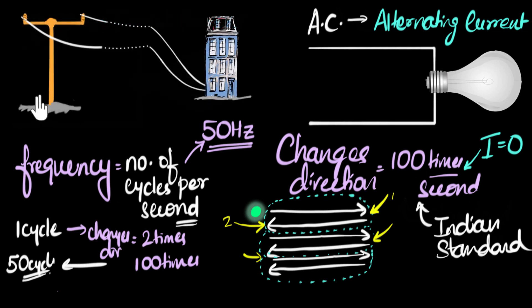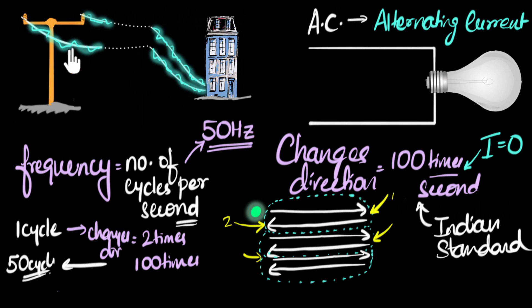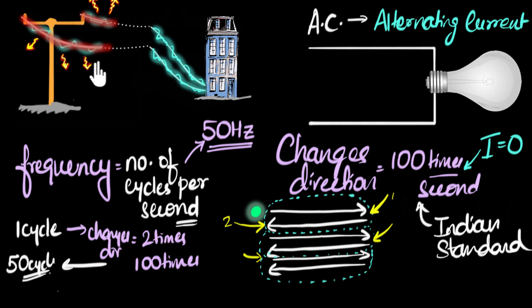The problem with carrying a lot of current in the transmission wire is that it heats up the wire and causes a lot of heating. Heating is loss of energy — the electrical energy is getting converted to heat, meaning most of the electricity is being wasted. That would be very, very inefficient. That's why we go for alternating current, not direct current.